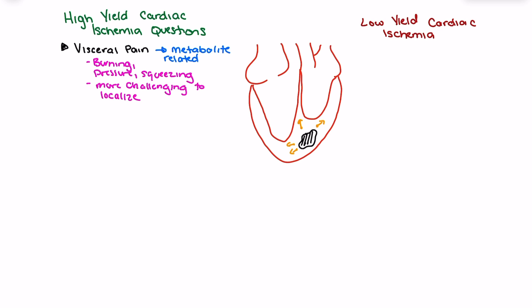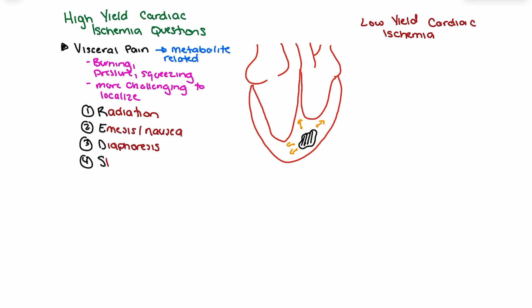When looking at high yield assessments or questions for cardiac ischemia, we use the acronym REDS. REDS comes out of multinational studies and meta-analyses that examined symptoms patients experience during cardiac ischemia — patients who presented pre-hospital, were transported to hospital, and had ischemia confirmed by ECG or blood work. R stands for radiation, E stands for emesis or nausea, D stands for diaphoresis, and S stands for shortness of breath. These symptoms are all indicative of metabolite release or challenges with cardiac output, which makes them so predictive.